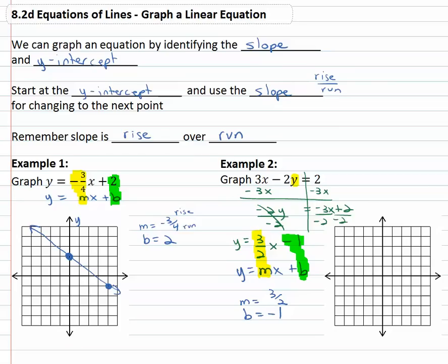We can now graph this line by starting at the y-intercept of negative one, that's the vertical axis. And then using the slope rise over run to find the next point. We'll rise three and run two and we've got our next point. Connect the dots, come up with our line.